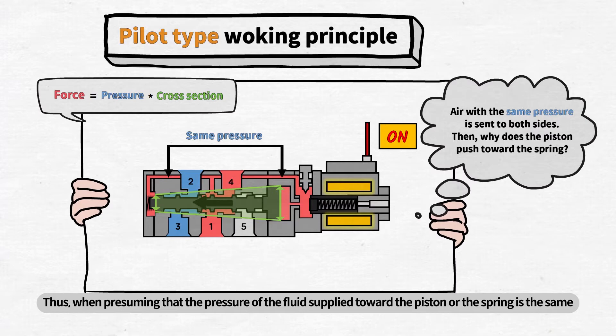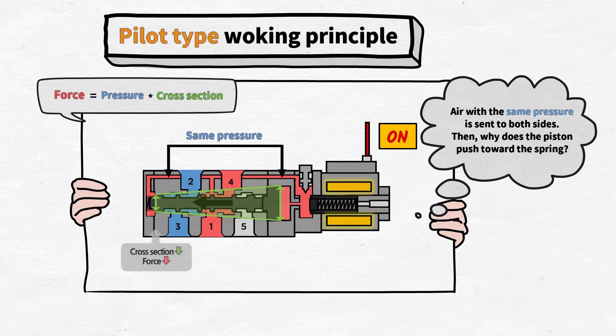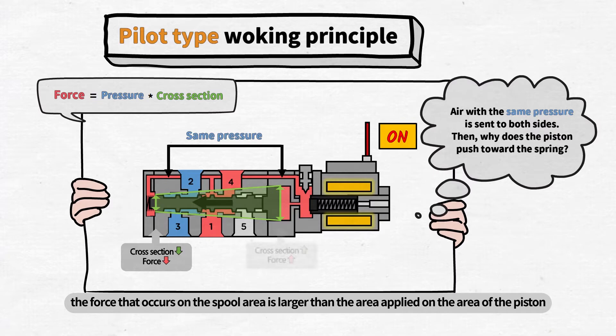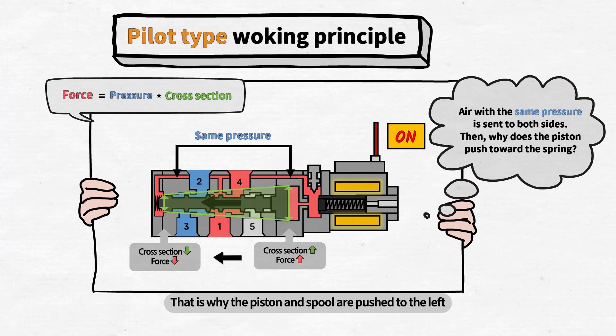Thus, when presuming that the pressure of the fluid supplied toward the piston or the spring is the same, the force that occurs on the spool area is larger than the area applied on the area of the piston.